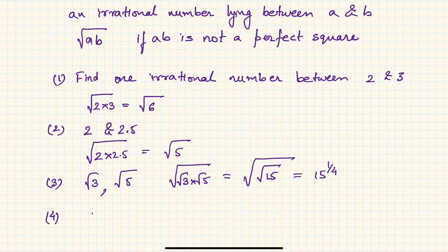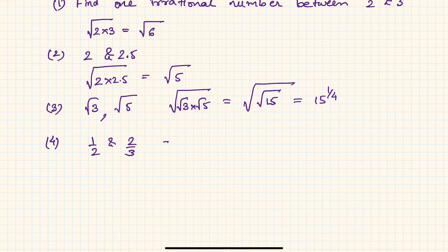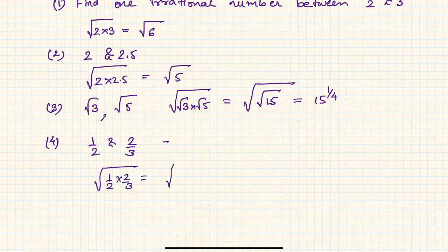Another example: if we have 1/2 and 2/3, an irrational number between them is √(1/2 × 2/3) = √(1/3). So all these are examples of finding an irrational number between two numbers a and b.